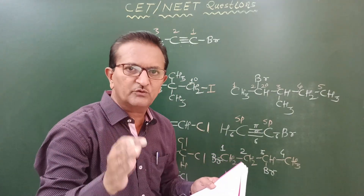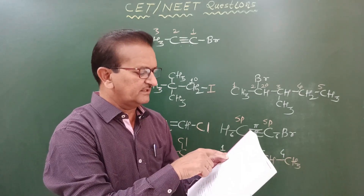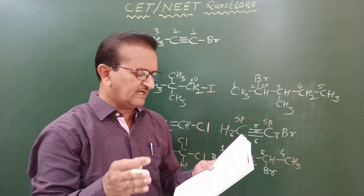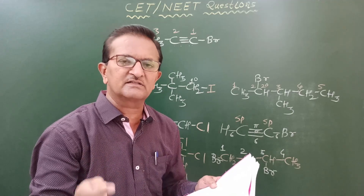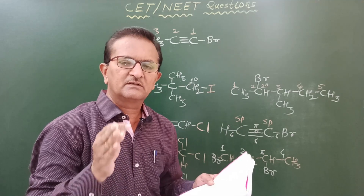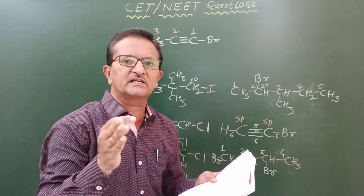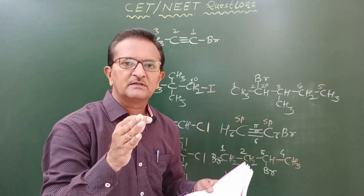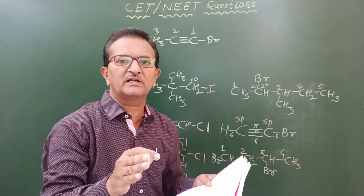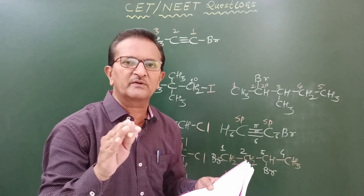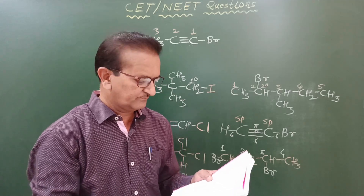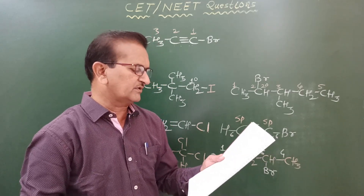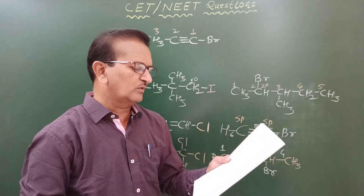Question 11 (informative): Which gas is used for refrigeration and air conditioning? The answer is CCl₂F₂, called dichlorodifluoromethane according to the IUPAC system, commonly known as Freon gas. Freon gas is used for refrigeration and air conditioning.